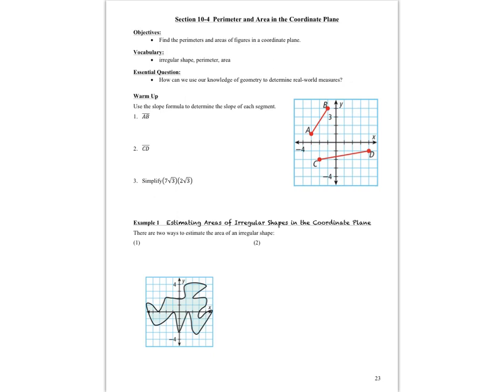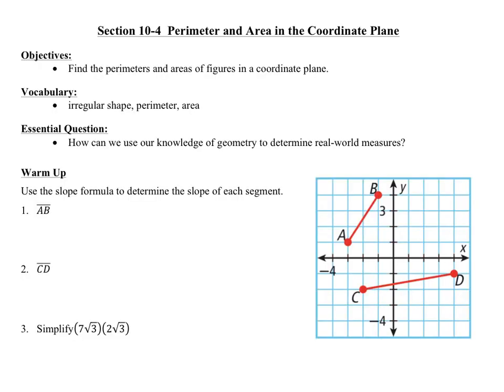Hi ladies and gentlemen, this is Ms. Skokin. We're going to be taking a look at section 10-4 from our textbook, titled Perimeter and Area in the Coordinate Plane. Our objective is to find the perimeters and areas of figures in a coordinate plane, and our vocabulary includes irregular shape, perimeter, and area.